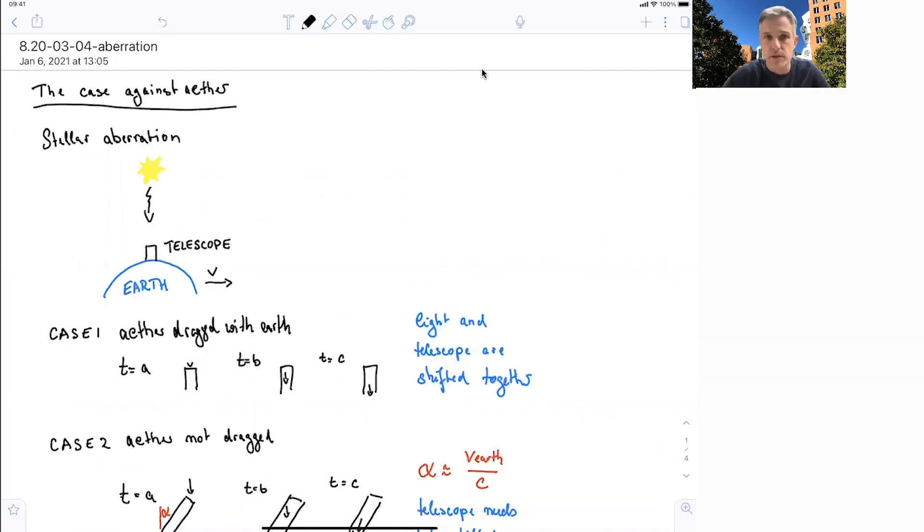Welcome back to 8.20, Special Relativity. So we're going to continue this discussion and make the case against ether by discussing stellar aberration.